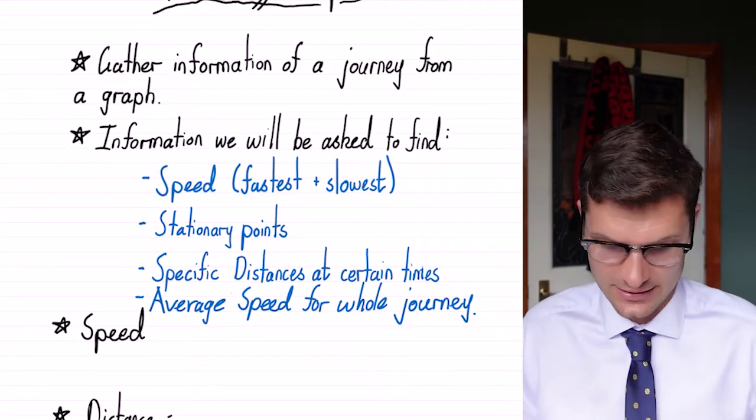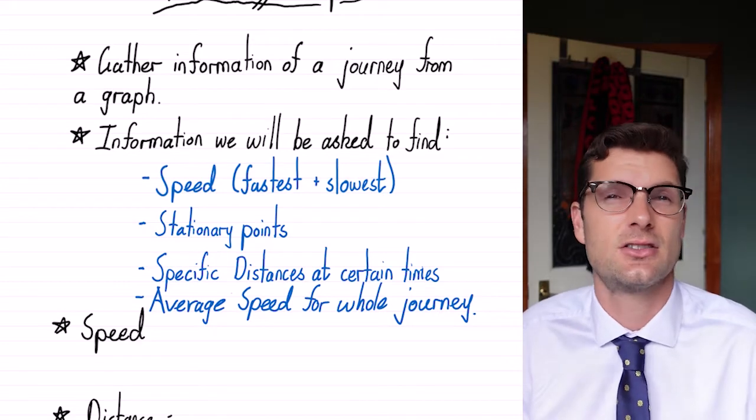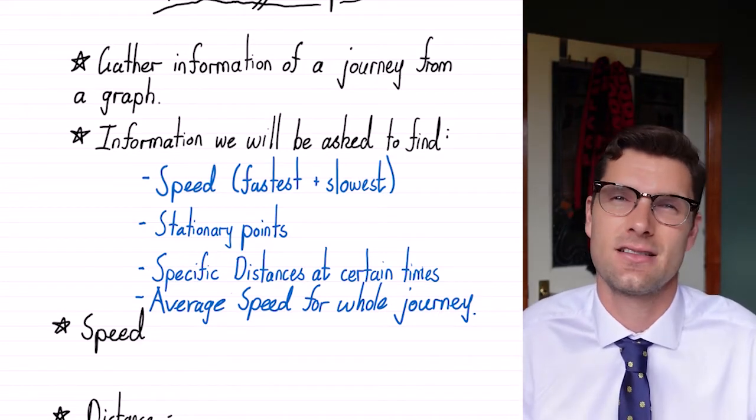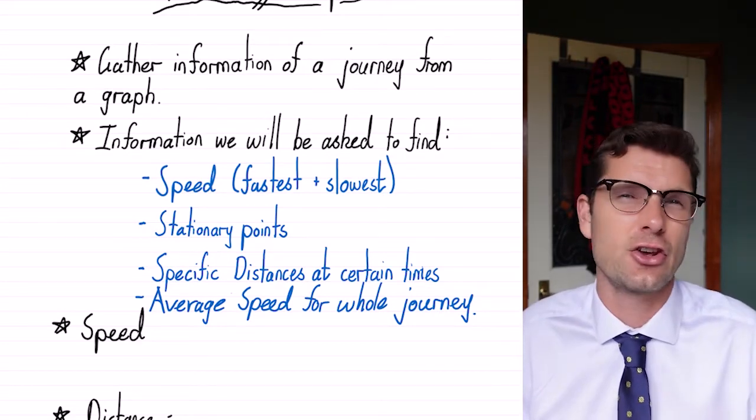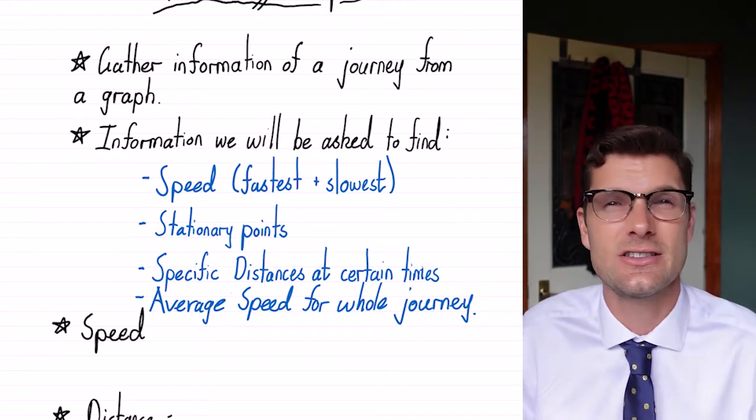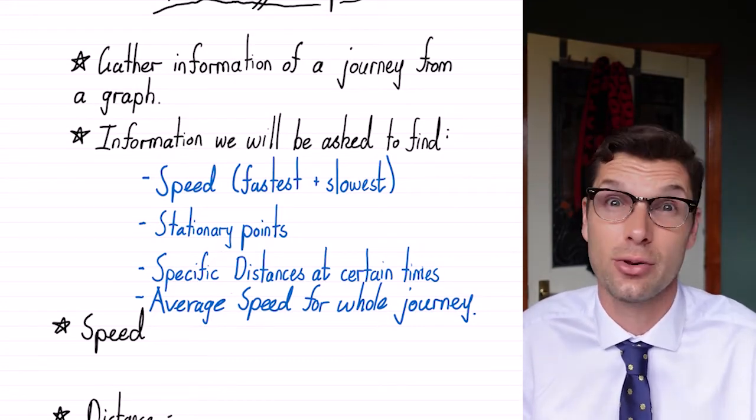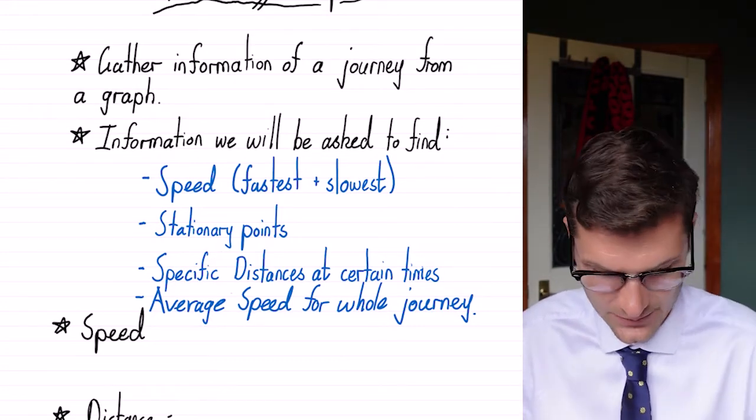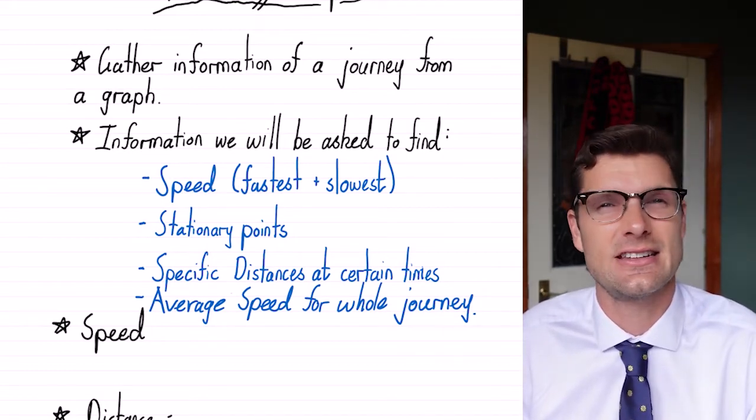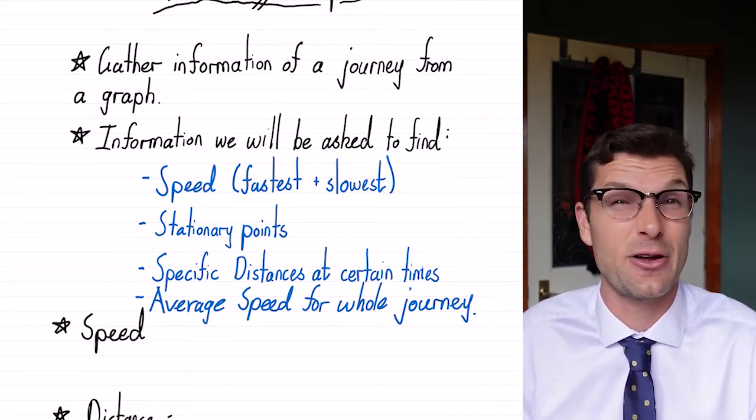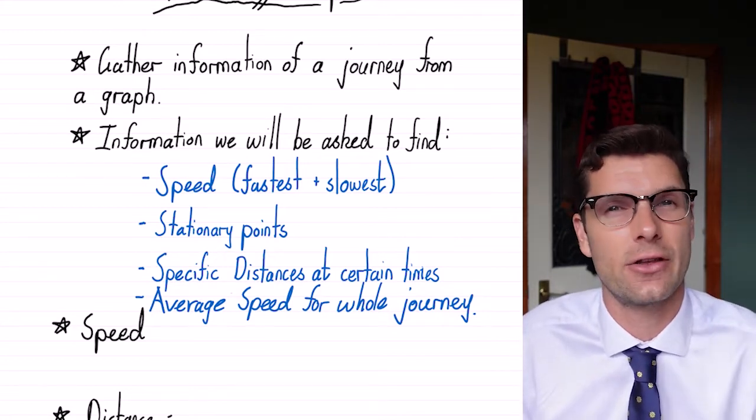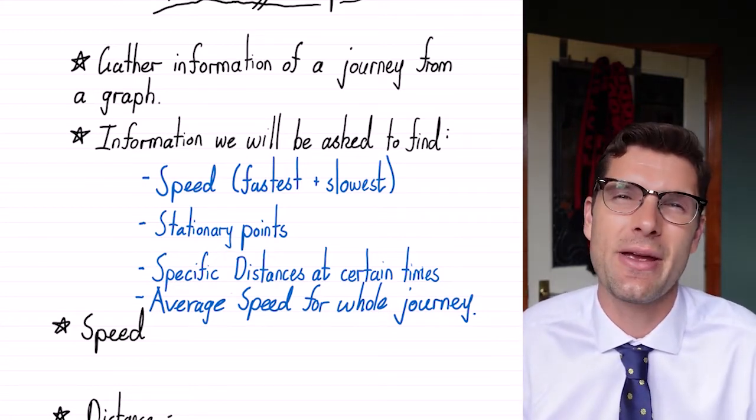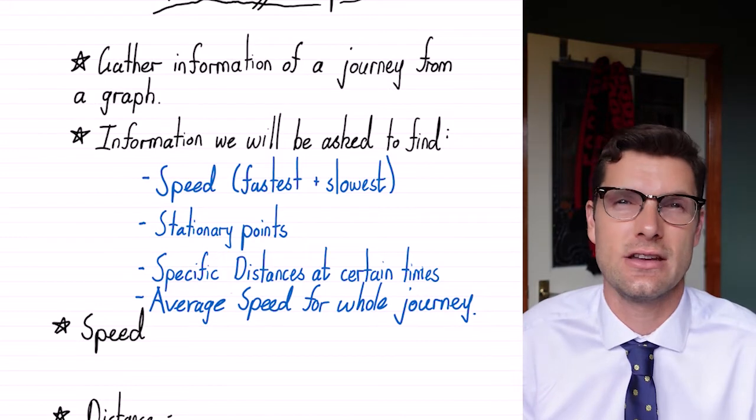So the information that you will get asked is potentially the speed - when am I moving fastest, when am I moving slowest? You're going to be asked to find stationary points or times where there's something completely different to what you would expect. You might have to find out the specific distance at certain times. That one's really easy, just reading off the graph. And finally you might be asked to find the average speed of the entire journey.